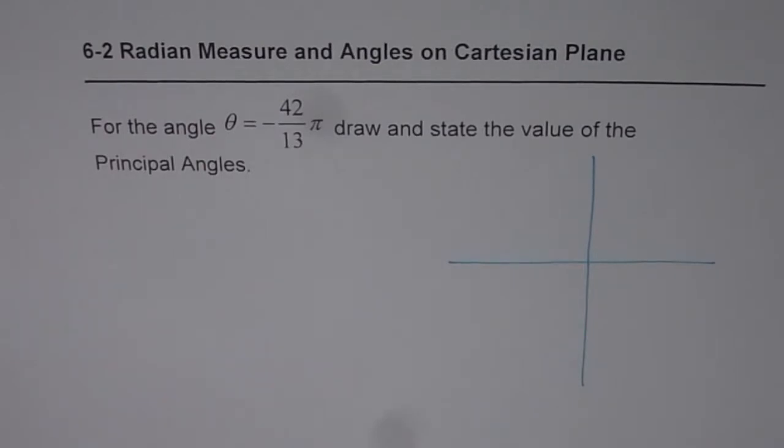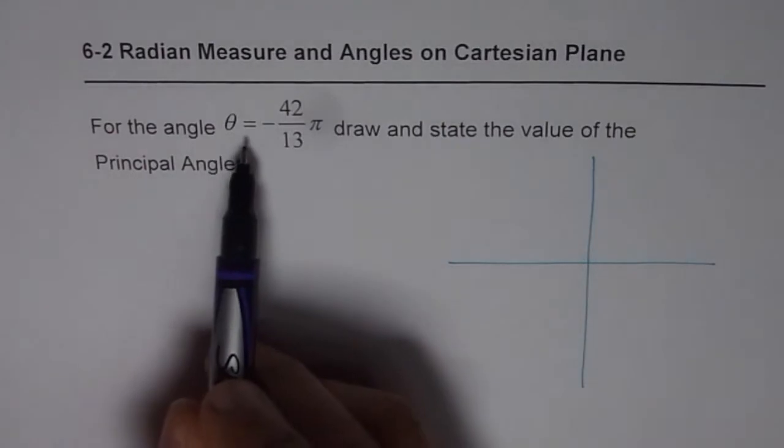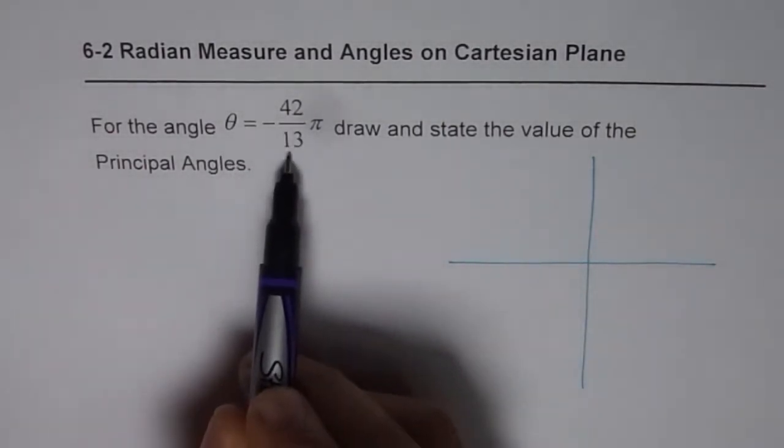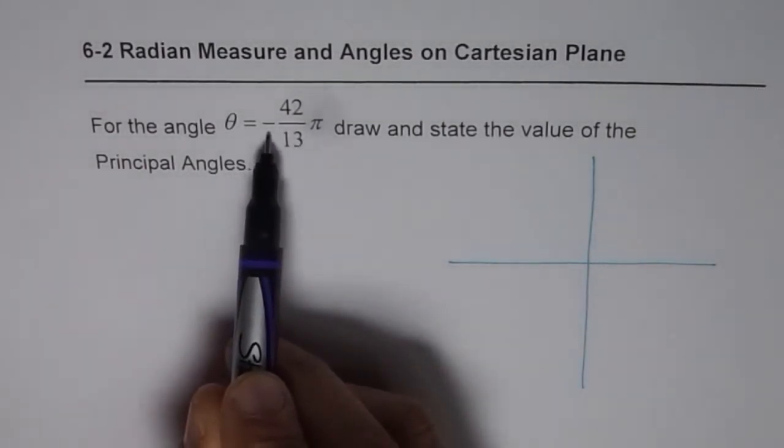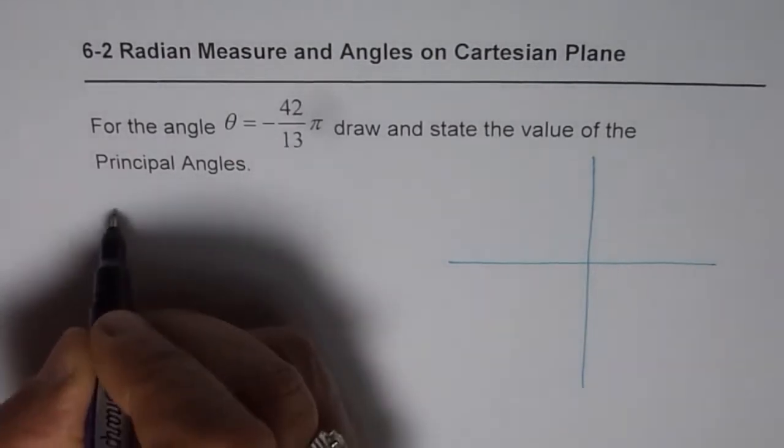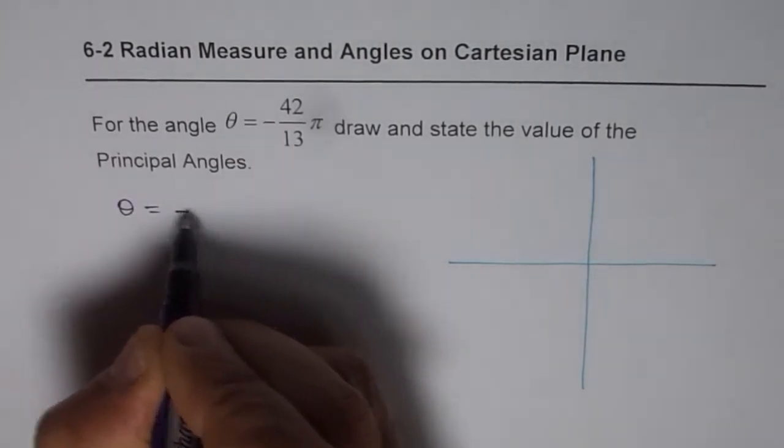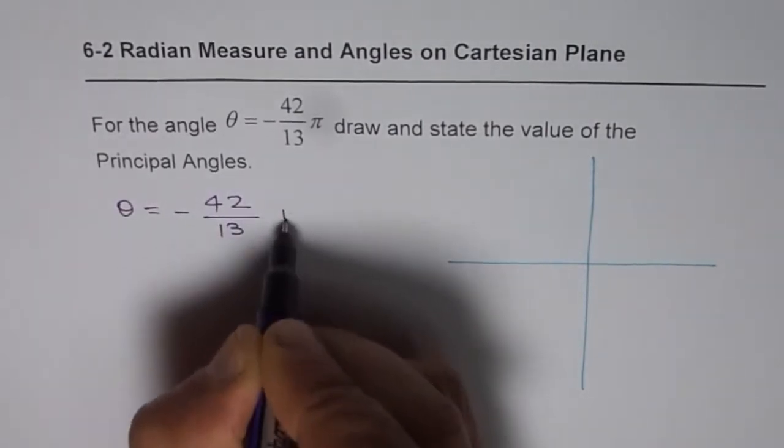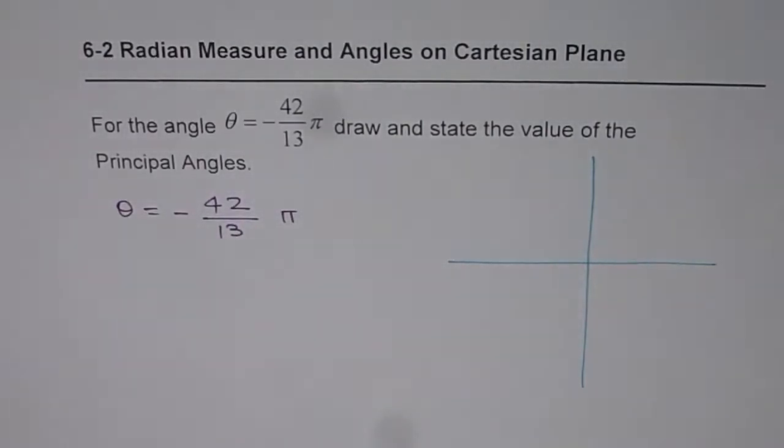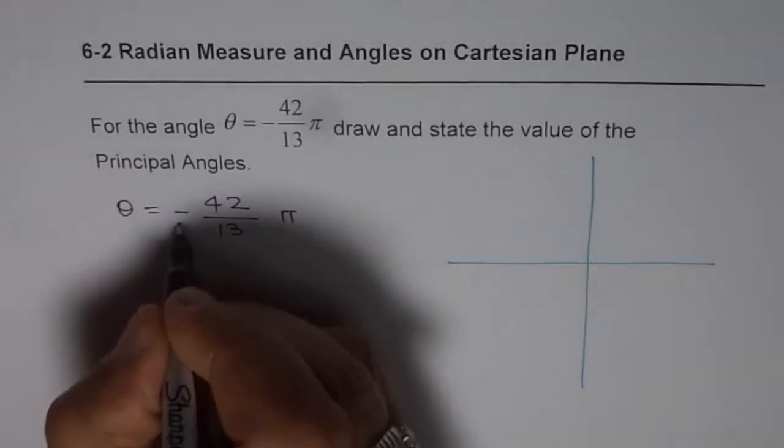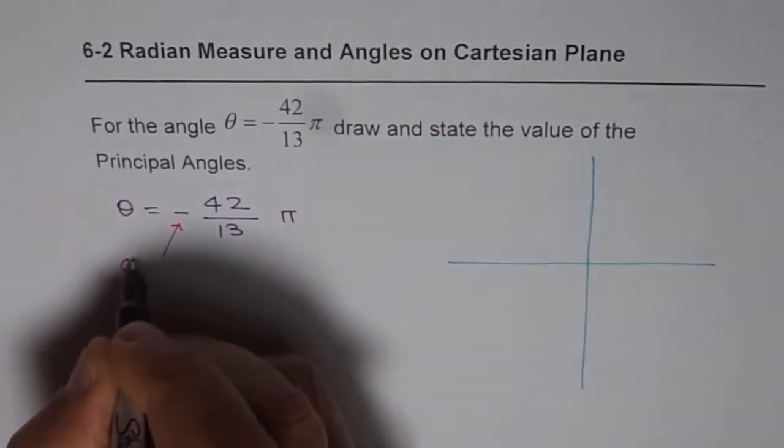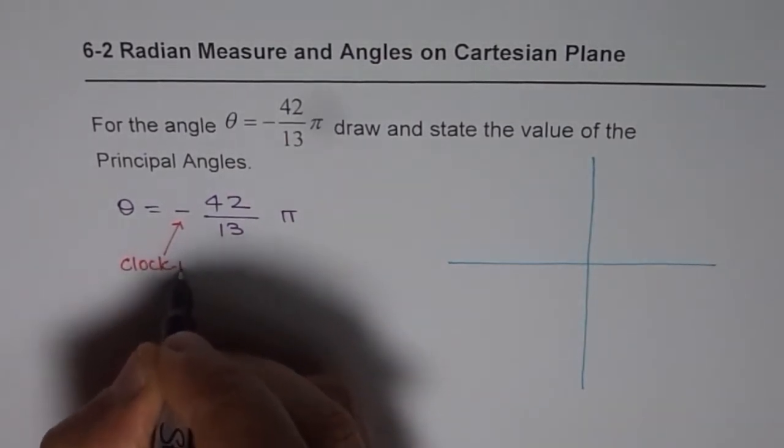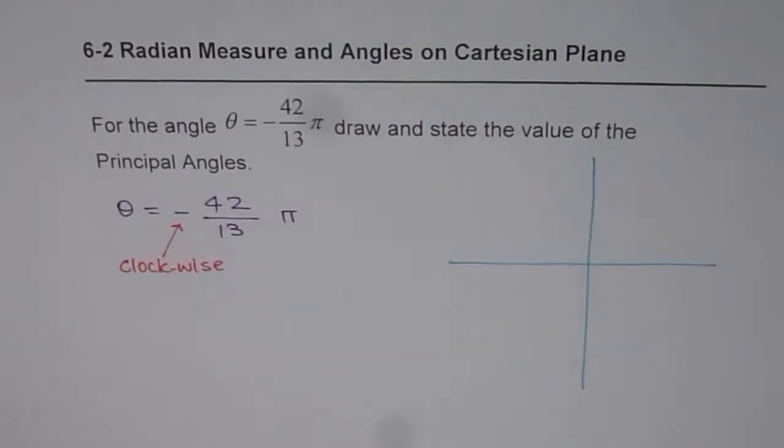Now let's see how to draw the angle θ equals minus 42 over 13 π. Minus means we have to go clockwise. So the angle is θ equals minus 42 over 13 π. When we say minus, it means clockwise.